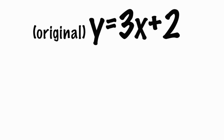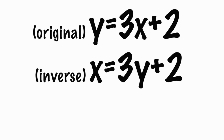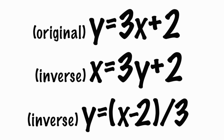Let's look at an example of how to find an inverse function. Take y equals 3x plus 2. All we're going to do is switch the x and y, so we get x equals 3y plus 2. Now we typically write functions solving for y, so we rewrite this as y equals x minus 2 over 3. This is the inverse function written in the standard way. The only rule that must be followed is switching the x and the y.